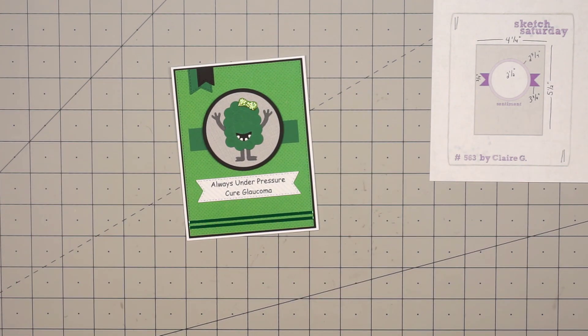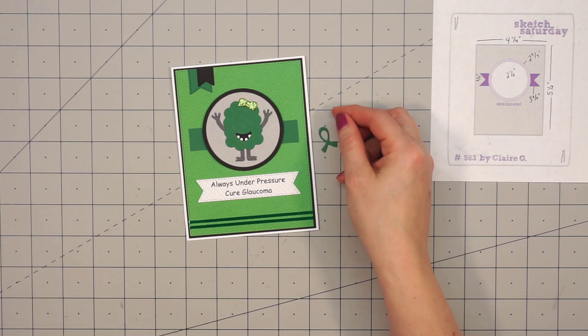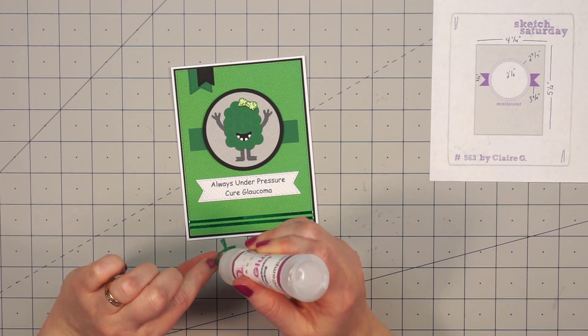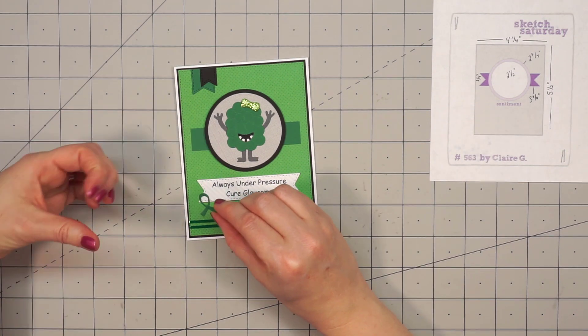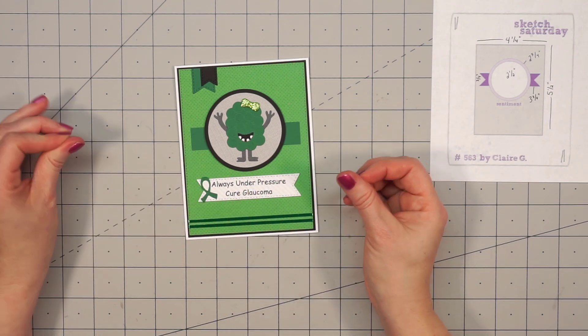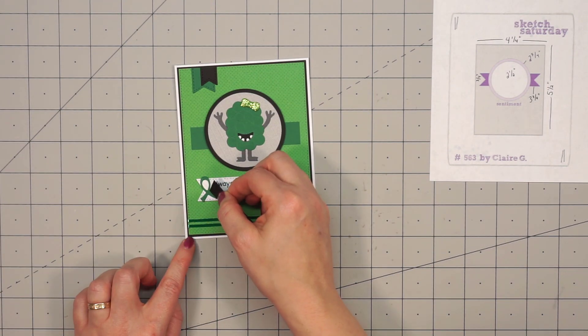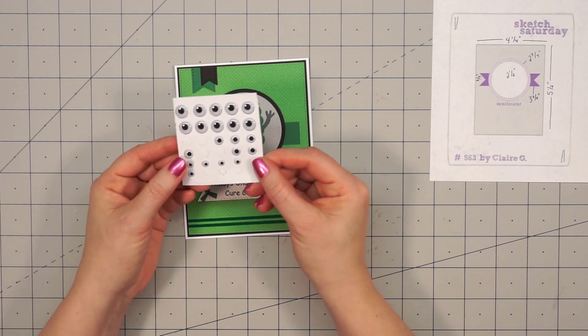Then using this same green cardstock, I cut out this small little awareness ribbon. This is a die from Paper Smooches, but I bought it several years ago, and I believe it is retired now. I just used some liquid adhesive and adhered it to the left-hand side of the sentiment.